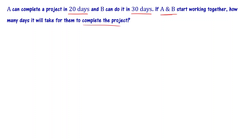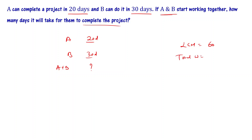Next problem: A can complete the work in 20 days, B can complete in 30 days. In how many days can A and B together complete the work? The LCM of 20 and 30 is 60. So total work is equal to 60 units.